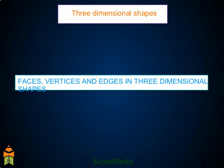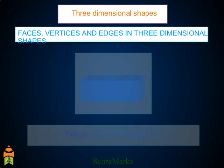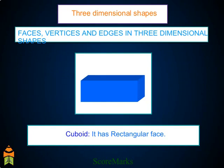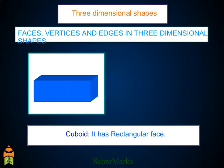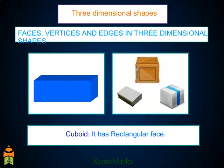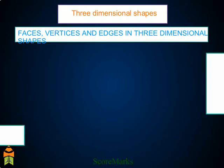Faces, vertices, and edges in three-dimensional shapes. Cuboid: it has rectangular faces. It is just like a wooden box, matchbox, and an almira, etc.